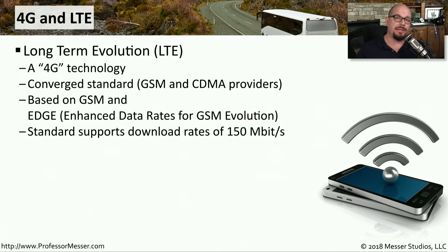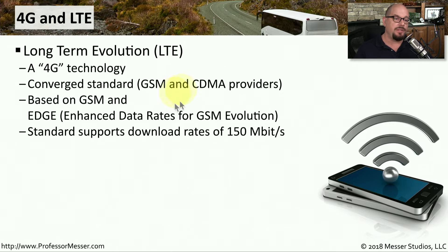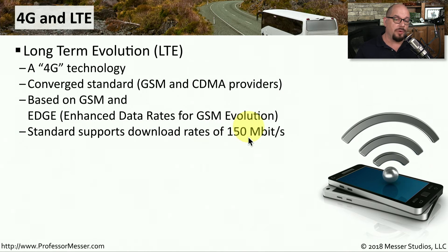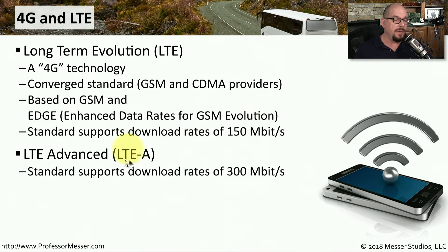With 4G technology, we began to consolidate the type of wireless networking we were doing over these mobile networks. Most of this consolidation consisted of LTE, or Long-Term Evolution networking, which was based on GSM and EDGE — the Enhanced Data Rates for GSM Evolution. The LTE standard supported download rates of 150 megabits per second, and an improvement called LTE Advanced doubled that to 300 megabits per second.